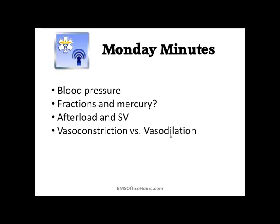Pressure in the aorta is what the left ventricle has to pump blood against — this is what we call afterload. The greater the afterload, the harder it's going to be for the ventricle to eject blood into the aorta, which reduces stroke volume — the amount of blood ejected per contraction. Afterload is largely controlled by arterial blood pressure: it's greater with vasoconstriction and less with vasodilation.